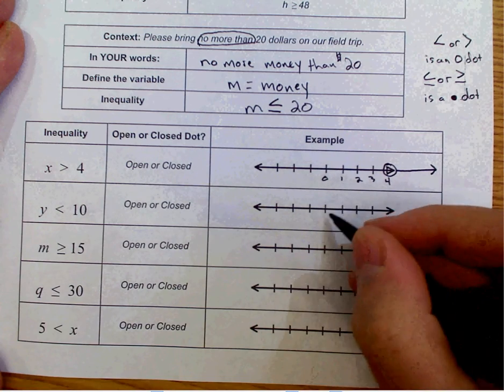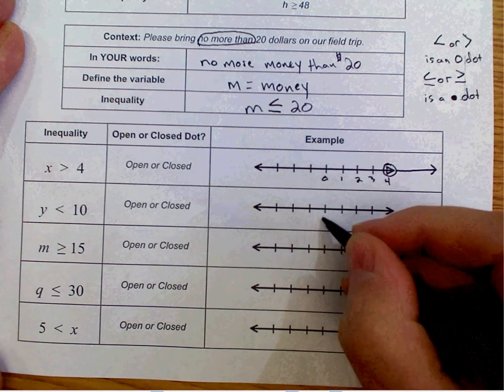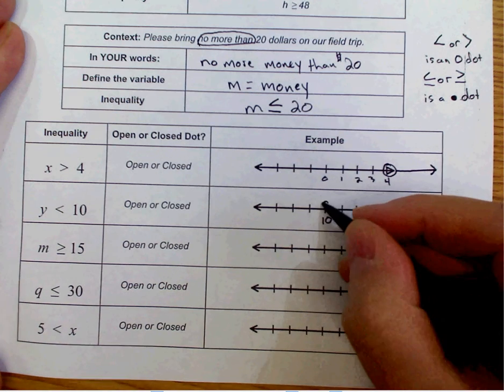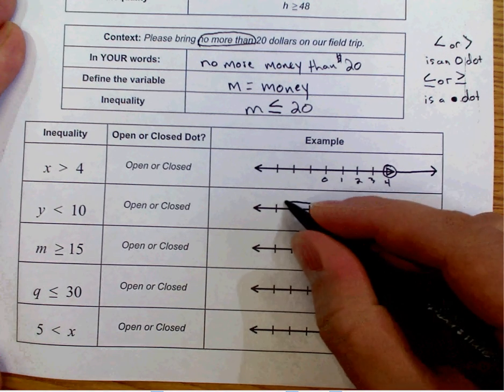For here, Y is less than 10. I'm going to have an open circle and the arrow going to the left.